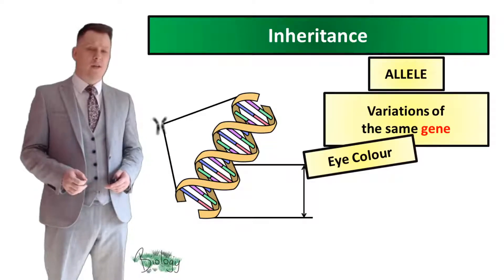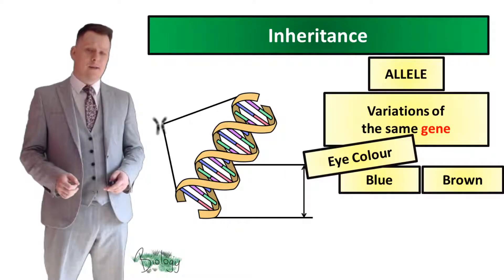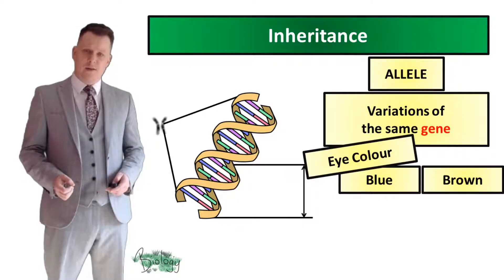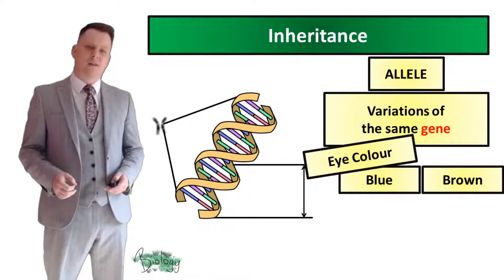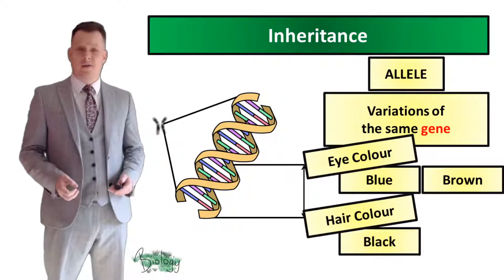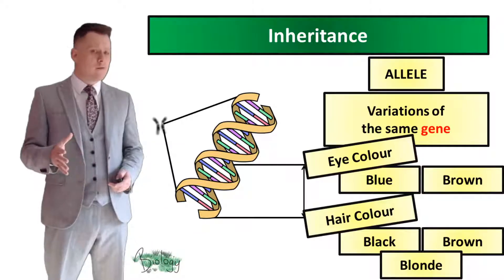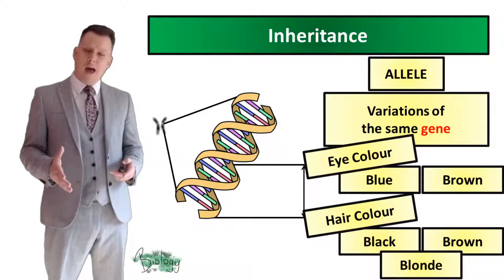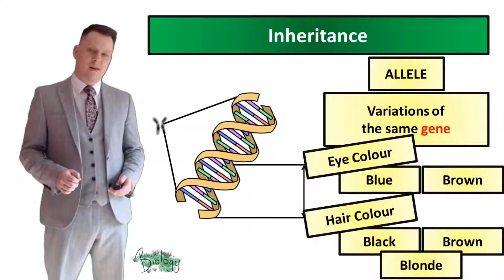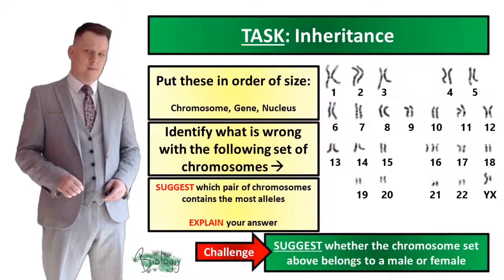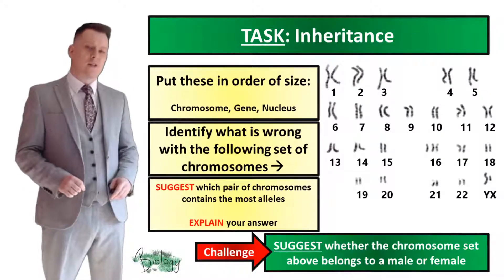So if you've got the eye colour gene, you can have the blue eye allele and the brown eye allele — they're both eye colour genes but different variations of the same gene. Same for hair colour: you can have a gene for black hair, brown hair, blonde hair, or any other colour. They're all hair colour genes but variations of the same gene. These are the alleles.